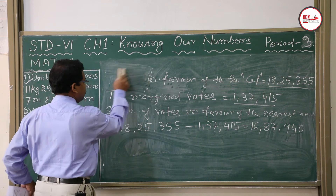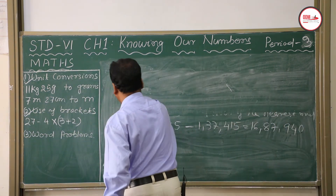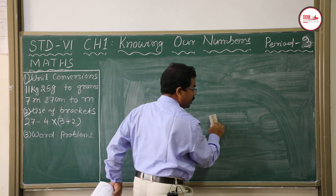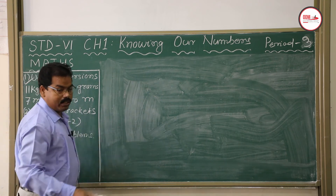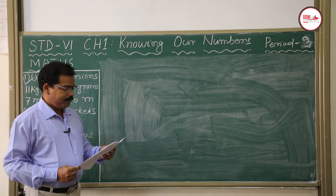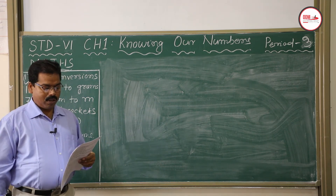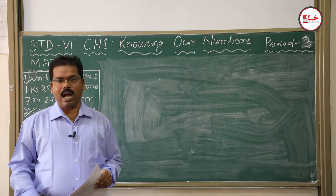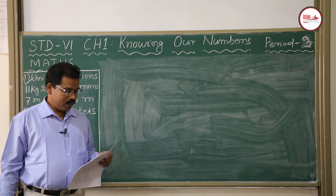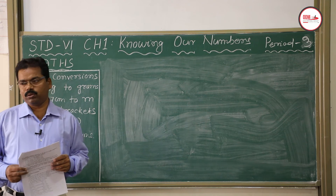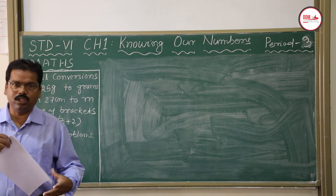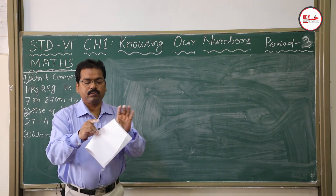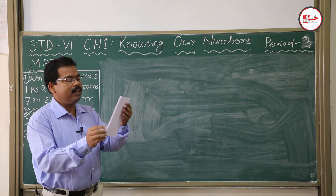Next word problem: The number of sheets of paper available for making notebooks is 1,25,000. Each sheet makes 8 pages of a notebook. To understand this: one flat sheet gives 2 pages; folding once gives 4 pages; folding again gives 8 pages. So one sheet of paper gives 8 pages.